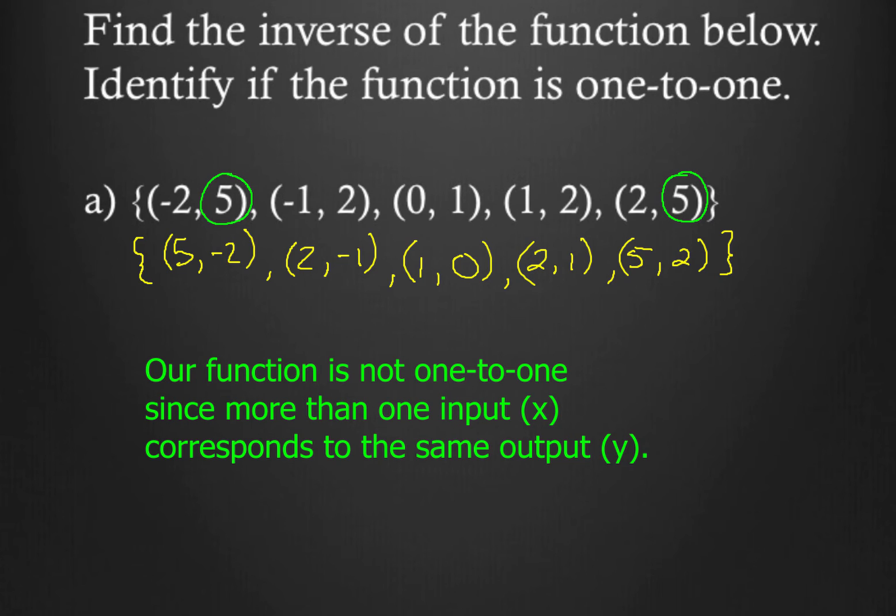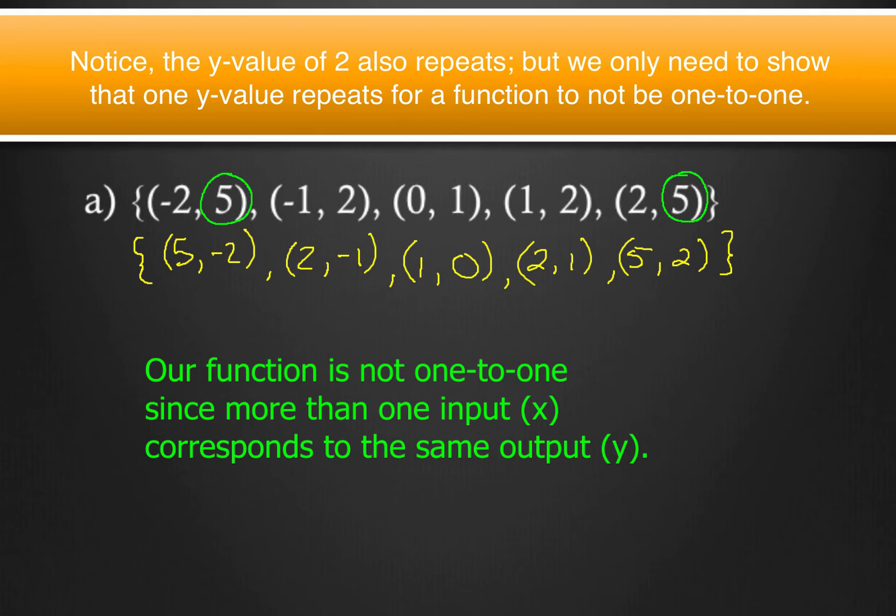Our function is not one-to-one since more than one input, the x-values, correspond to the same output. Because each input has to have a unique output. So the output, the y-value, that can't be the same. And in this case, it is for the coordinates (-2, 5) and (2, 5). Therefore, our function is not one-to-one.